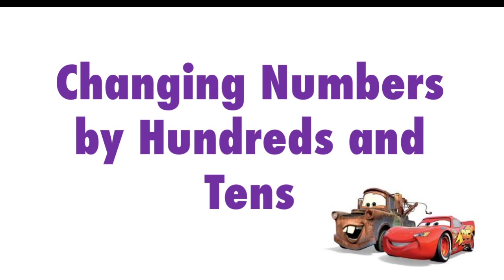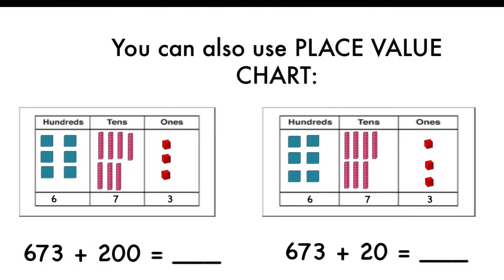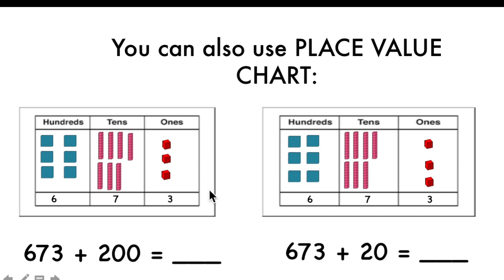Changing numbers by hundreds and tens. If you remember, for the big numbers we use place value blocks. These are place value blocks. These ones stand for hundreds. These pink ones, they stand for tens. And the red ones stand for the ones. When we write the numbers, we have hundreds, tens and ones. When we're changing the number by hundreds or by tens, we will change only one digit. Let's have a look.